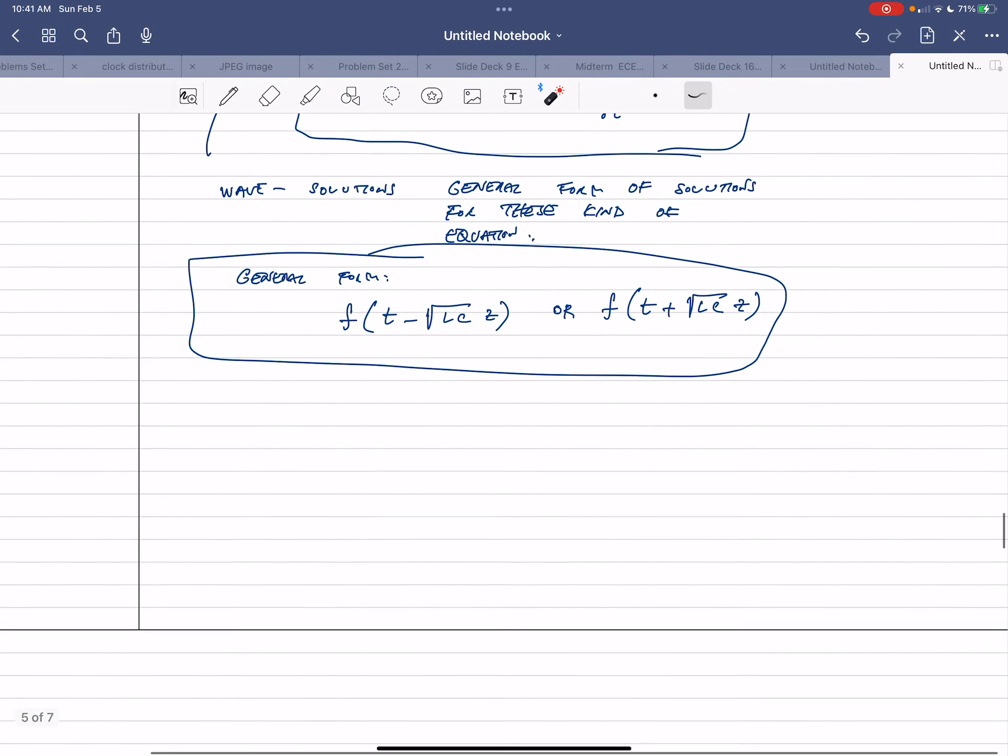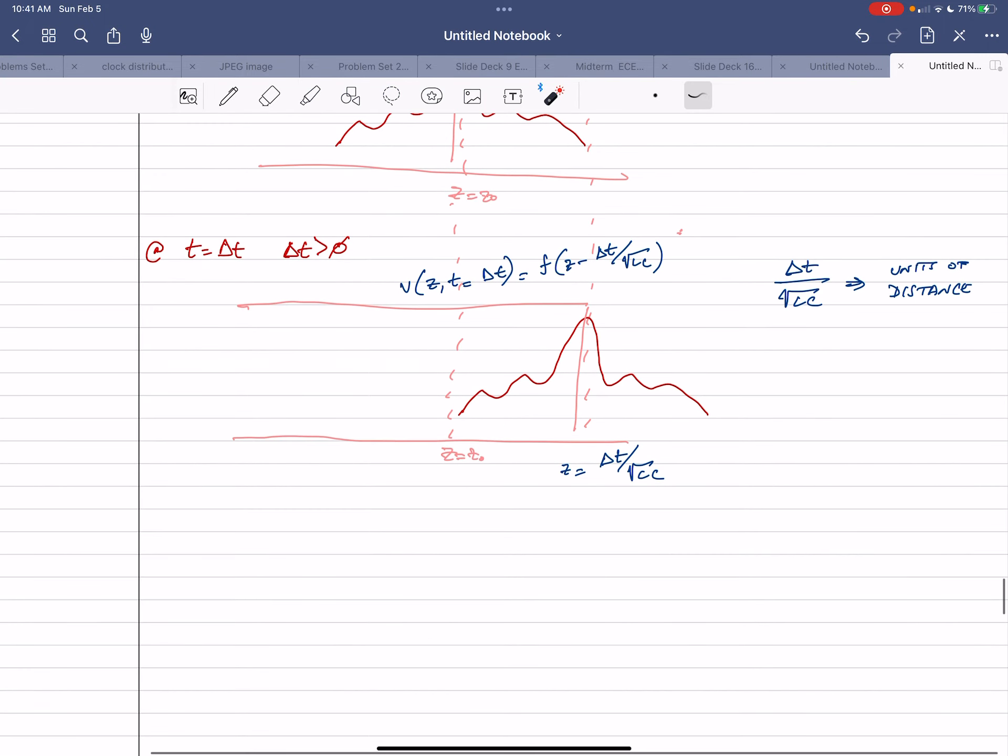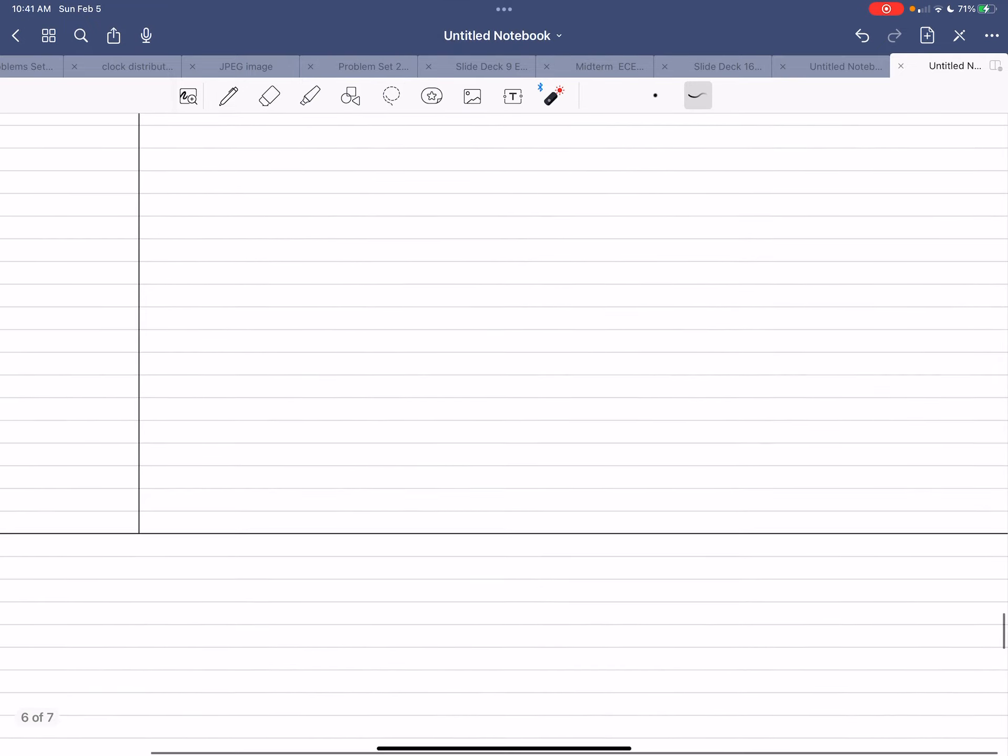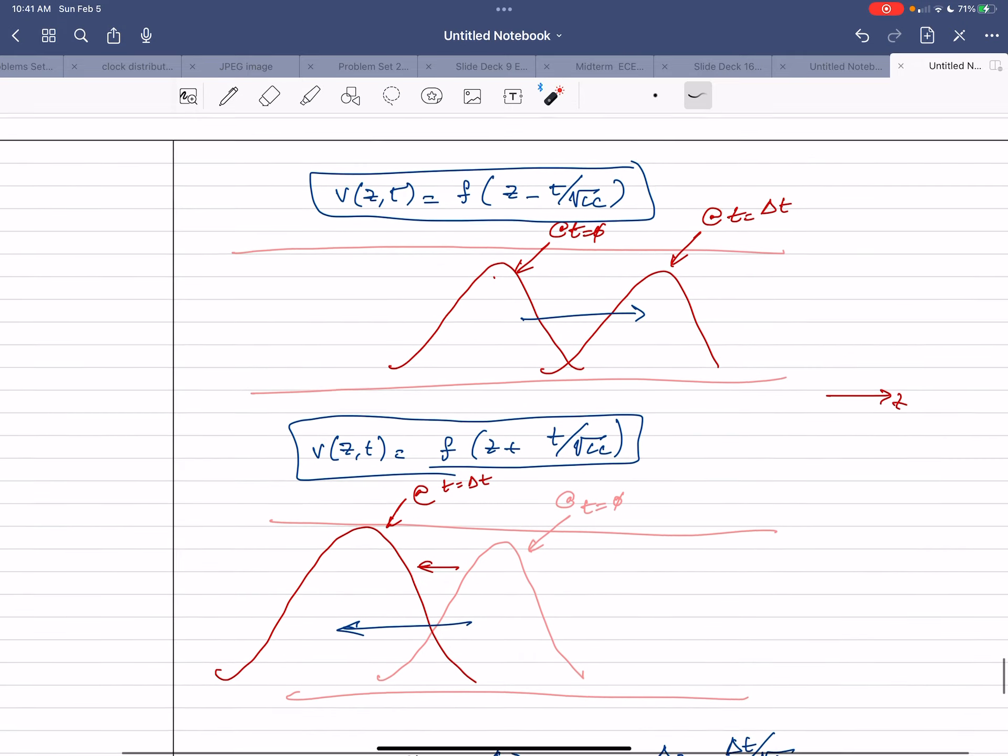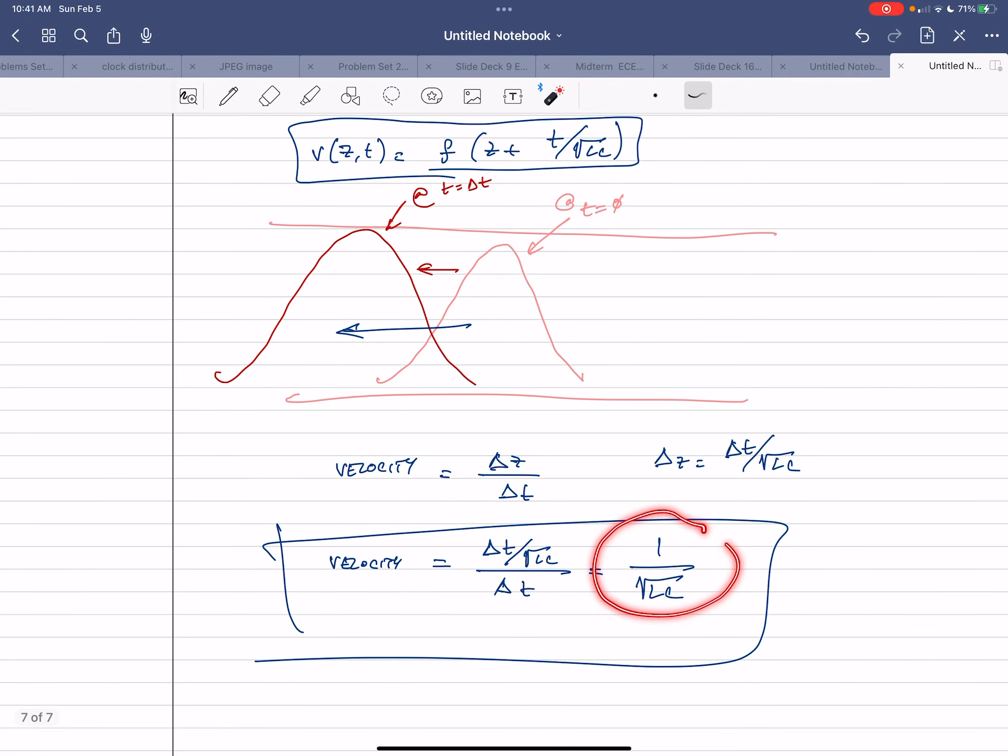And those waveforms are going to move with the velocity of one over LC. That's how fast those waveforms are going to go from one side of the transmission line to another, or that's how fast they're going to be traveling. So this is like a very important fact, is the velocity of this transmission line. It's an important parameter. Because notice we said in the previous lecture, we said that at least one of the properties of the transmission line is the delay through the transmission line. And this velocity tells you what the delay would be.